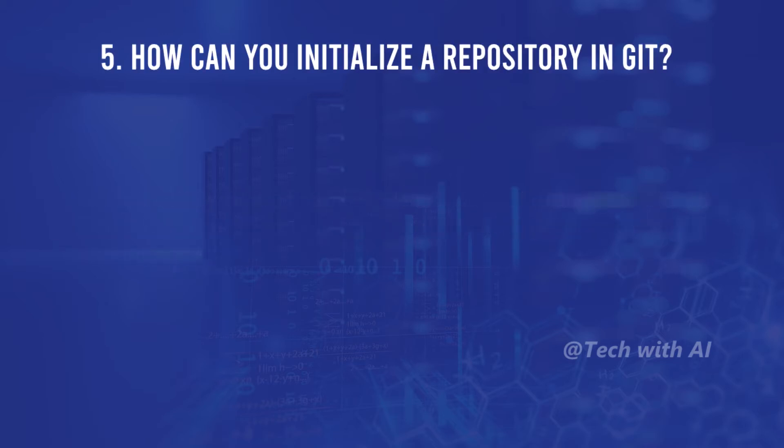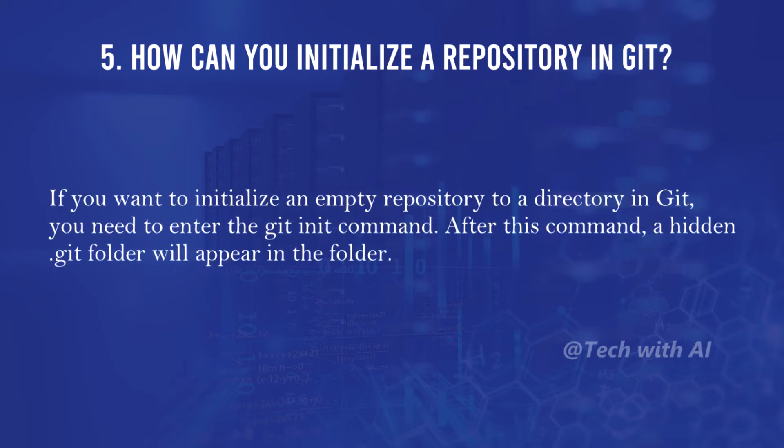How can you initialize a repository in Git? If you want to initialize an empty repository to a directory in Git, you need to enter the git init command. After this command, a hidden .git folder will appear in the folder.